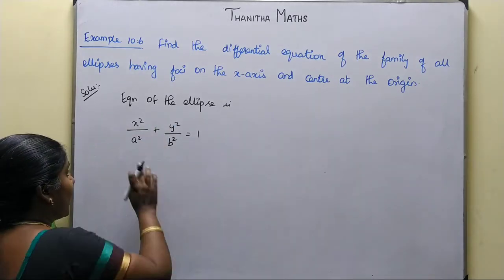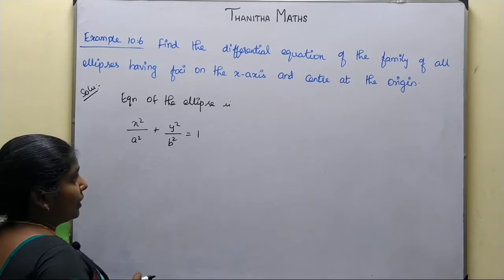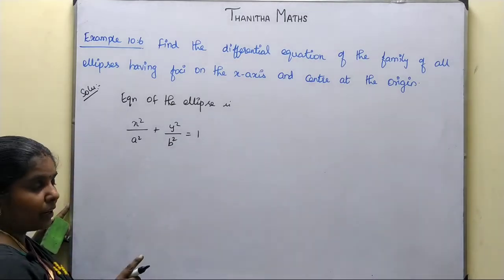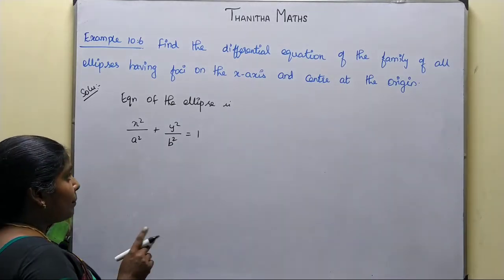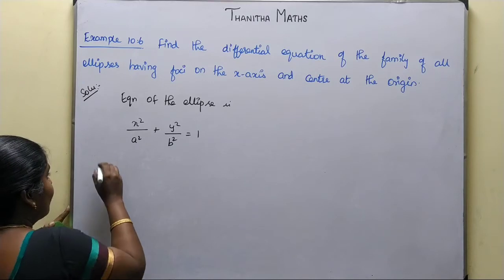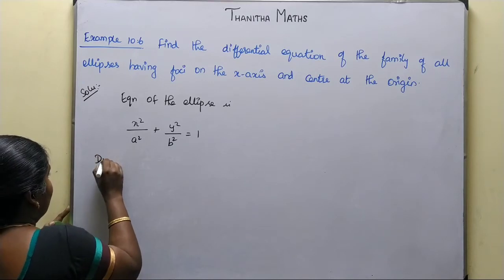Now here we have the arbitrary constants a and b. So we differentiate 2 times to remove the arbitrary constants a and b. We differentiate with respect to x.